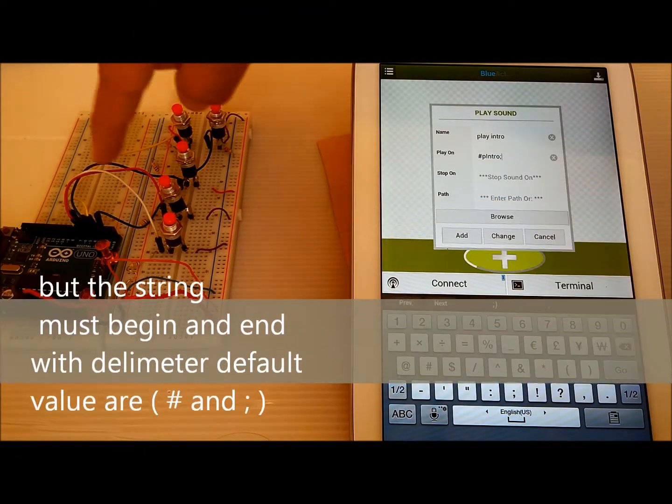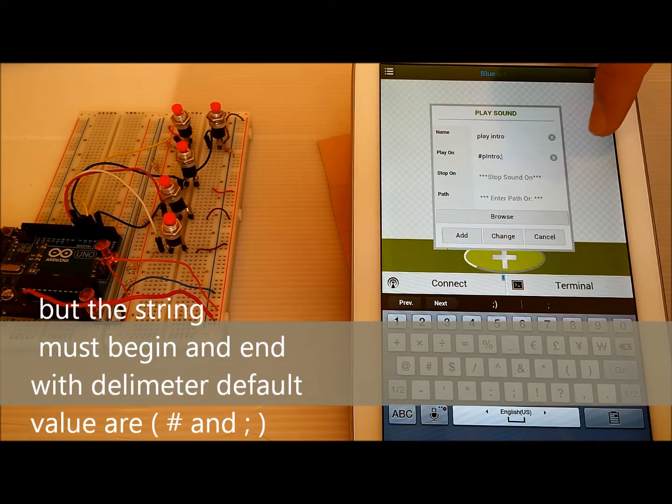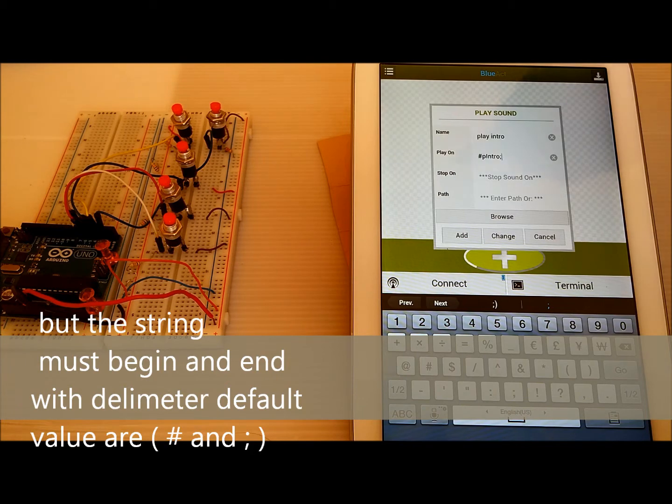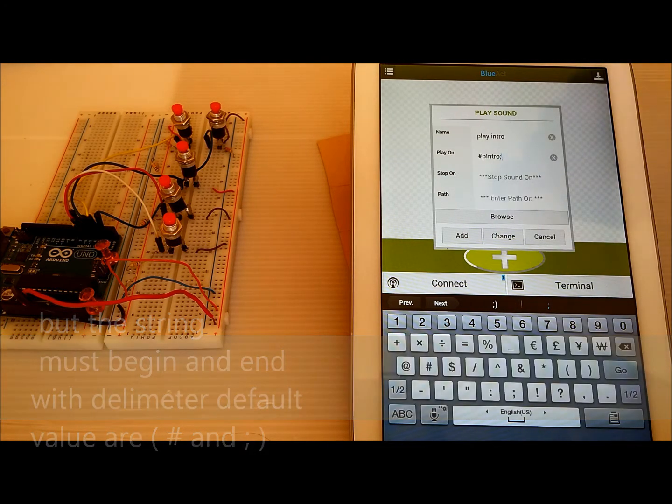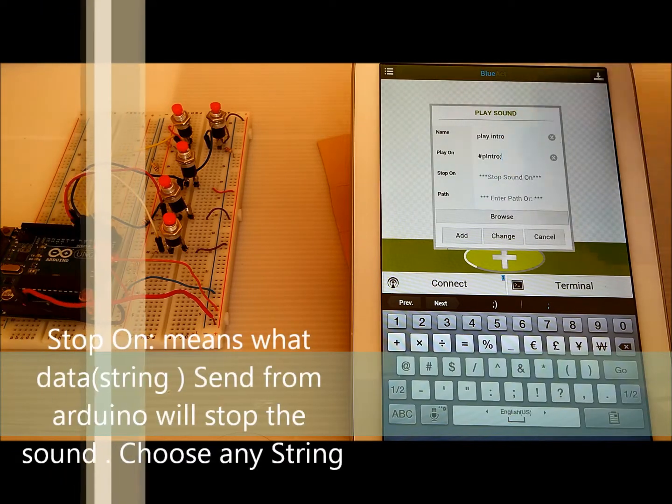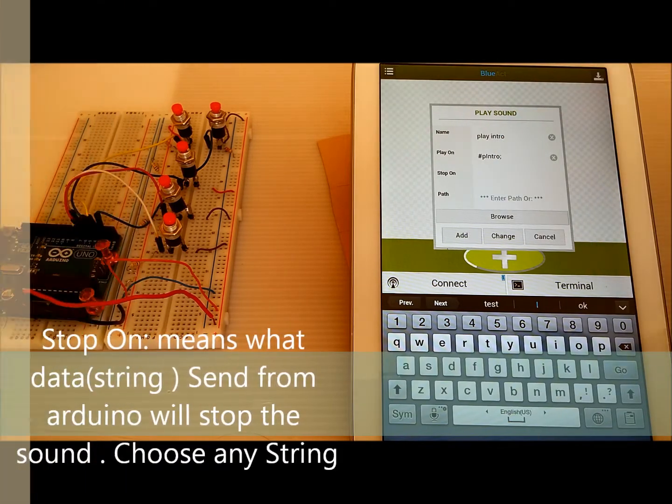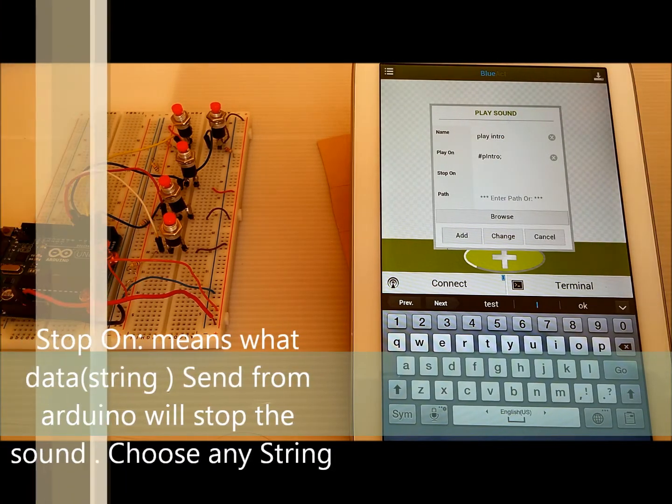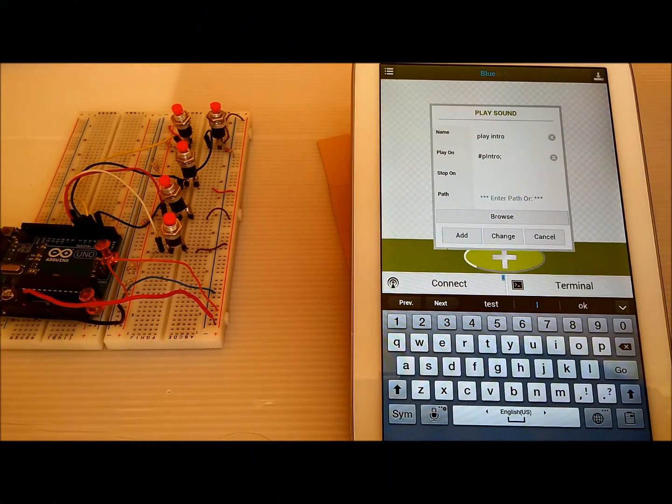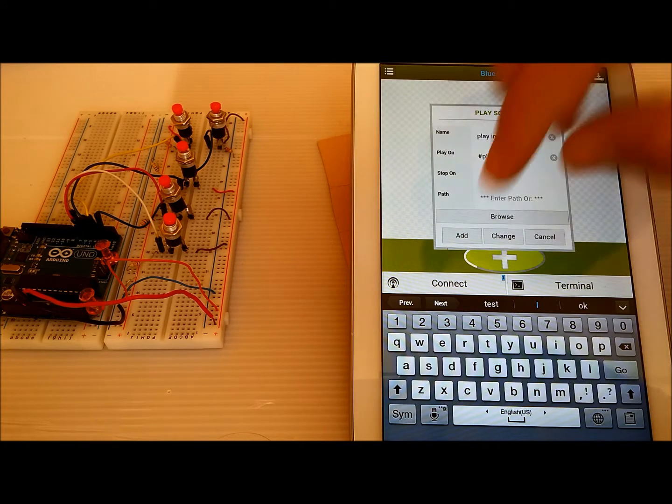So when the Arduino sends hash P enter semicolon, this app, this action will be played. It will be stopped when we send S or hash S semicolon. But you don't have to write hash S semicolon. All you need to write is S.